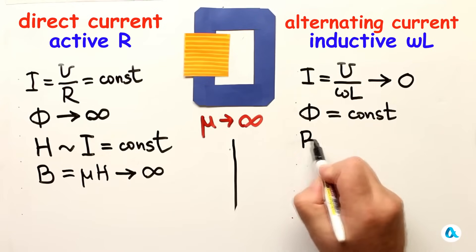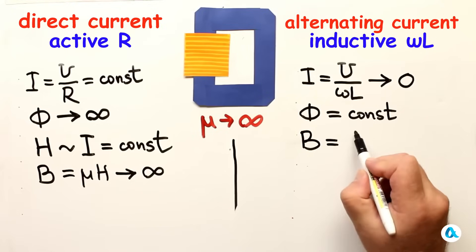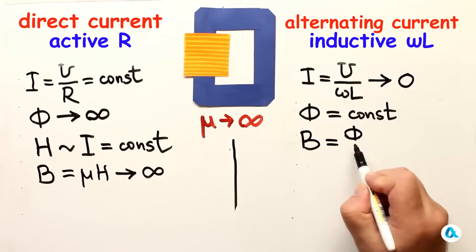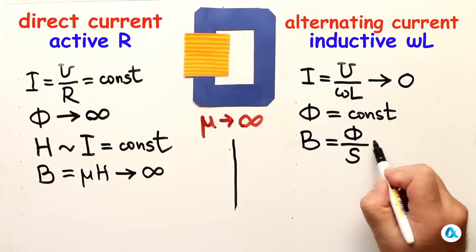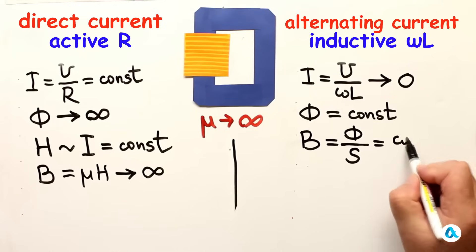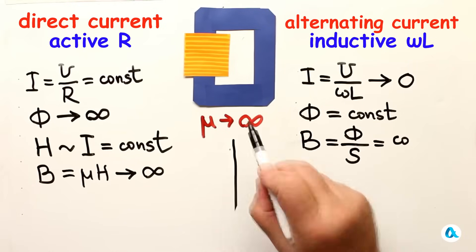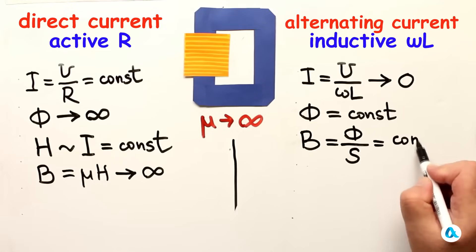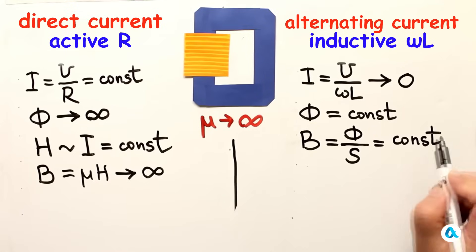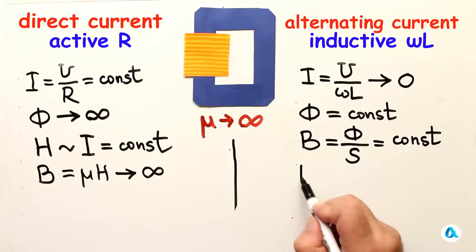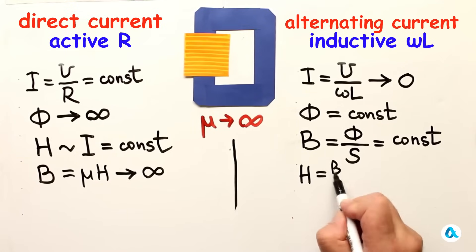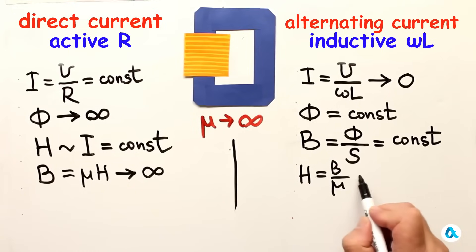Now, on this side, B in our case, it is essentially advantageous for us to write it as flux divided by area. Since the flux is constant, the magnetic field B inside the core will not depend on the change in mu. And the magnetic field H, which is B divided by mu, when mu approaches infinity, it approaches zero.